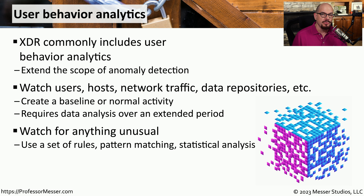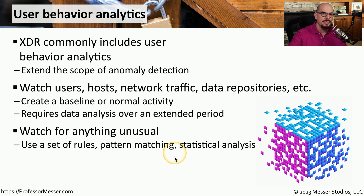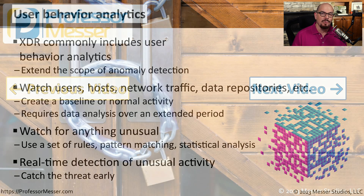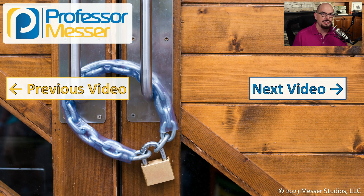This definition of unusual can change over time, but it usually references a set of rules configured in the XDR software — perhaps performing pattern matching to a known vulnerability, or based on statistical analysis making a best guess about what type of traffic there might be on the network. The goal is to simplify the process of finding the malicious code and then stopping it in real time before it becomes a much larger problem.